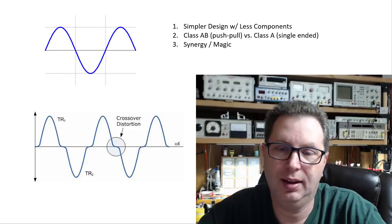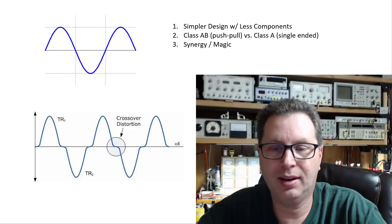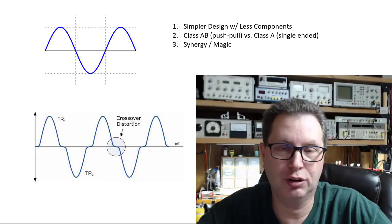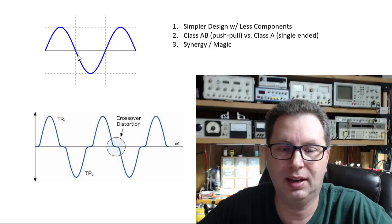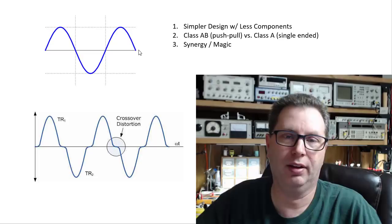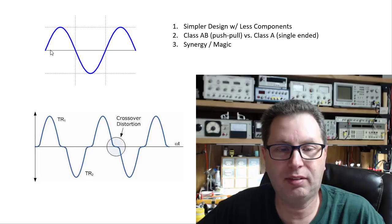Up next you've got Class AB which is push-pull. You're taking the audio signal and you're splitting it in half. So you see this sine wave up here on the top. In a Class A amplifier it amplifies every bit of this signal, both the positive peaks and the negative peaks of this signal, and spits it through the amplifier and sends it out the other side as a larger signal. In a Class AB amplifier you split this signal in half in your amplifier.